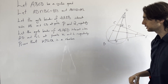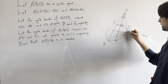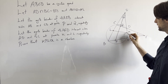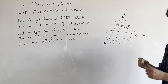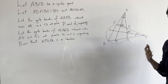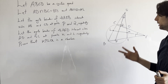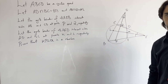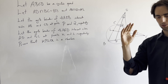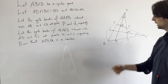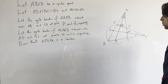We must prove that KPLQ is a rhombus. What is a rhombus? A rhombus is a quadrilateral where all four sides are equal. You can think of it as a square that's leaning a bit — that's what a rhombus is. That's what we have to prove: KPLQ is a rhombus.